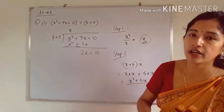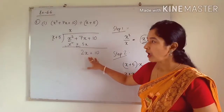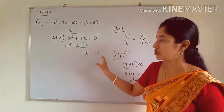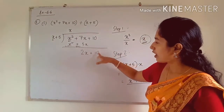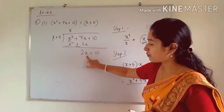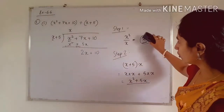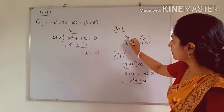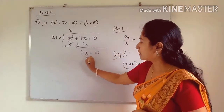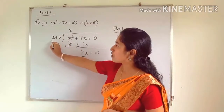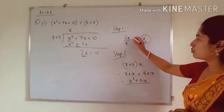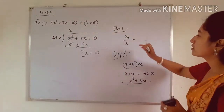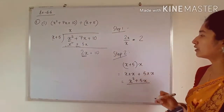Our new dividend is 2x + 10 and our divisor remains the same. We take the first term of the new dividend and divide it by the first term of the divisor: 2x ÷ x. The x's cancel, giving us 2.